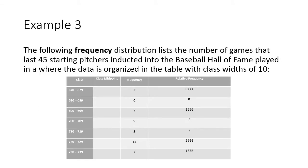The first thing we want to do is take a look at the example from the last video, example three, about the Baseball Hall of Fame pitchers and how many games they played in. Since I want to graph now with the class midpoint, I better find those class midpoints. The class midpoint is the average of those two consecutive classes. So my first class midpoint is the average of 670 and 680, or what's right in the middle, which is 675.